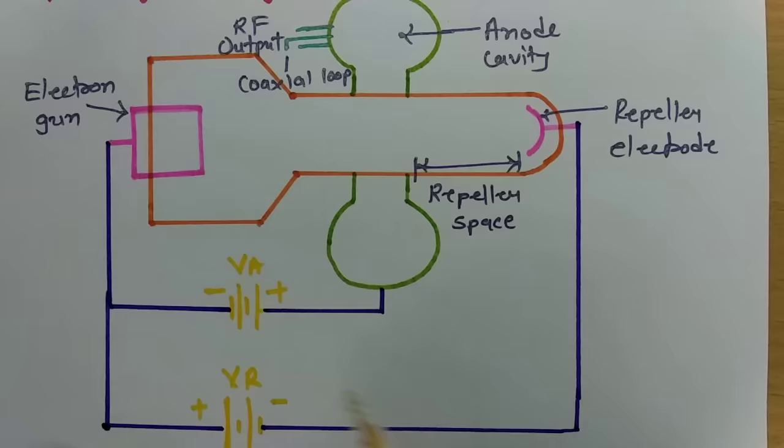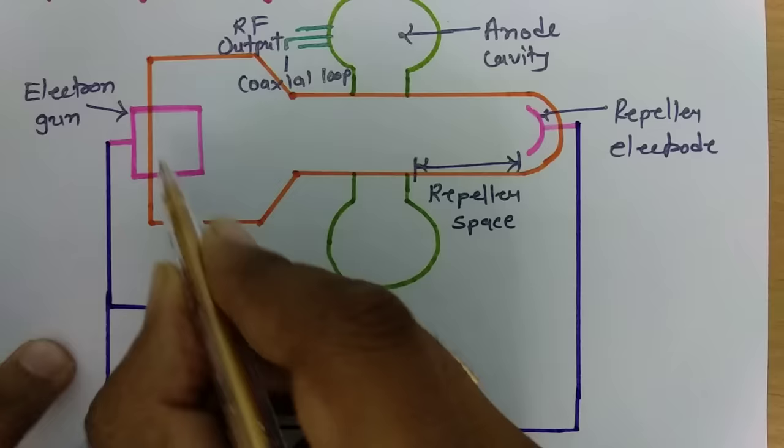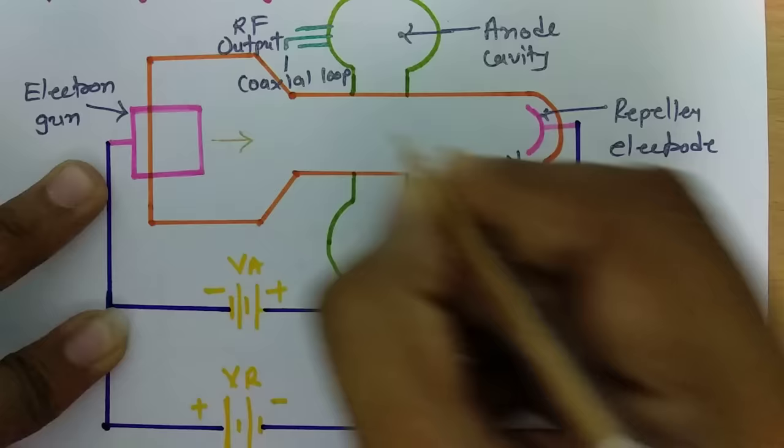Now in this complete structure, as we give anode voltage to the electron gun, electrons are generated from the electron gun and they are emitted in this direction. The generated electrons will move towards this direction and will get collected in the anode cavity.